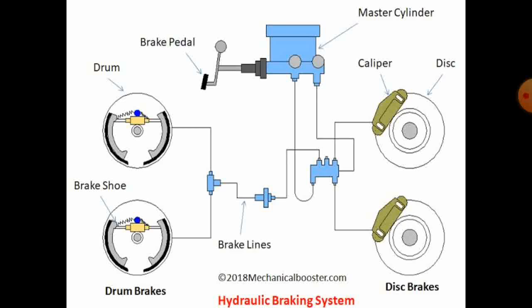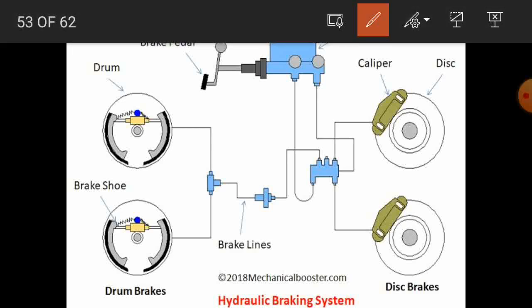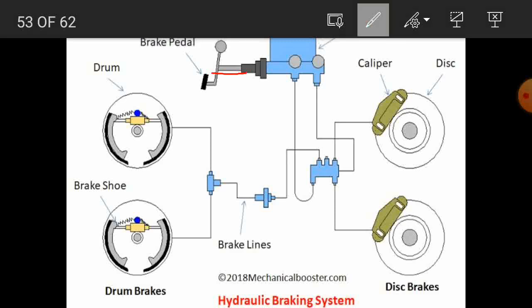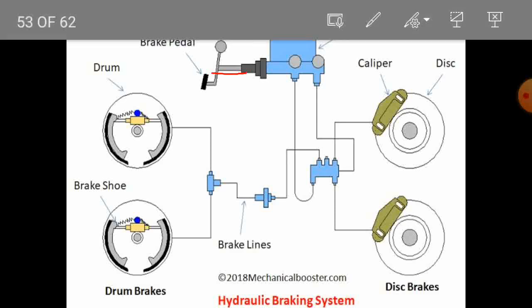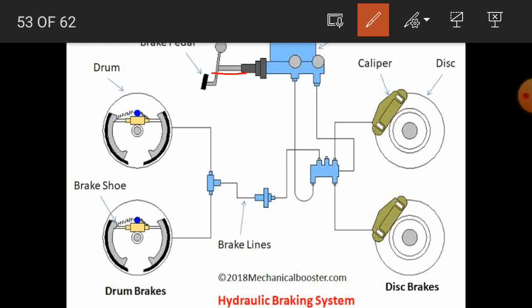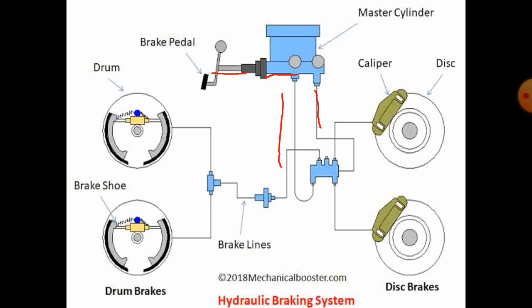In this diagram, when the brake pedal is pressed, the piston is pressed in the master cylinder. The master cylinder contains brake fluid. When the brake pedal is pressed, the fluid is also pressurized and that pressurized fluid passes through the brake lines — the brake pipes — which are connected to the front wheels and rear wheels. In this diagram we can see that both drum brake and disc brake systems are used.